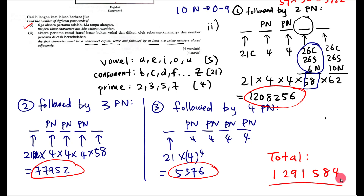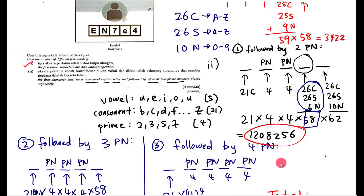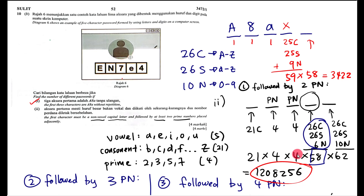So the total answer for part two is 1,291,584. This question is quite tricky — you must read carefully. In the diagram, they purposely show two different E's — one capital, one small — so you understand they accept both. A common mistake is thinking digits are 1 to 9; remember to include zero. I hope this short video helps you understand how to solve this type of KBAT question. If you found it helpful, give me a like and I'll see you in the next video.